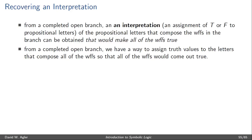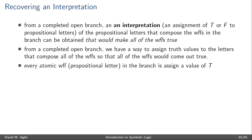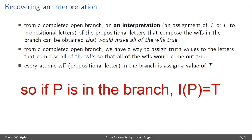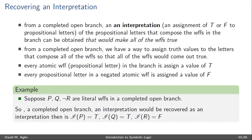So how do we obtain an interpretation from a completed open branch? The method is quite simple once the tree has been fully decomposed. What we'll do is isolate the formulas that cannot be decomposed — these are the literal well-formed formulas. We'll assign a value of T to the propositional letters found in atomic well-formed formulas, and a value of F to the propositional letters found in the negated atomic well-formed formulas. So imagine that P, Q, and not-R are the literal well-formed formulas found in a completed open branch.